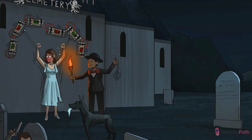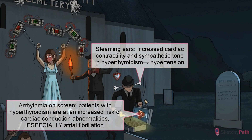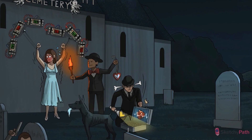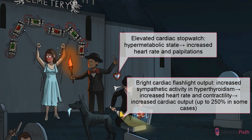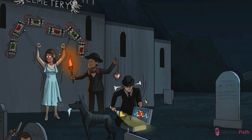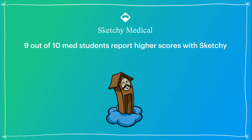Via direct action of thyroid hormone on cardiac myocytes, as well as enhanced sympathetic activity, patients with hyperthyroidism present with increased heart rate and contractility. Cardiac output can increase by as much as 250%, as depicted by the generous output from that heart-shaped flashlight. Many patients experience tachycardia and palpitations at rest. Systolic hypertension is also common. That irregular line of static on the screen is meant to remind you of the irregularly irregular heartbeat characteristic of atrial fibrillation. Patients with hyperthyroidism are at increased risk for premature beats, supraventricular tachycardia, and atrial arrhythmias — the most common rhythm disturbance being atrial fibrillation, which occurs in up to 20% of patients.